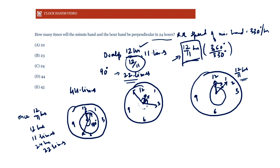Here's a question to think about: how many times in a period of 24 hours will the angle between the minute hand and the hour hand be 30 degrees? Think about it and answer in the comments.